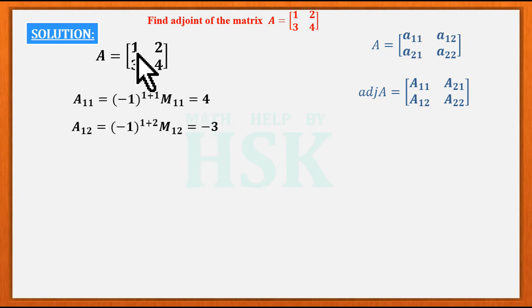Similarly, A12 would be equal to -1 times M12, that is 3. A21 would be equal to (-1)^(2+1), that is -1 times 2, which is -2. And A22 would be equal to (-1)^(2+2), that is 1. For this element 4, the minor would be 1, so the cofactor would be also 1.